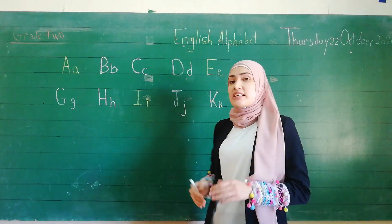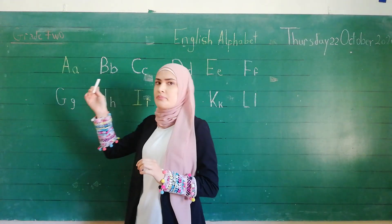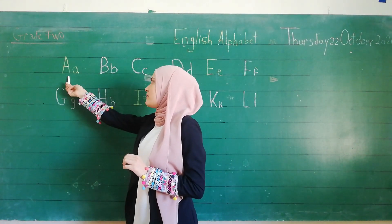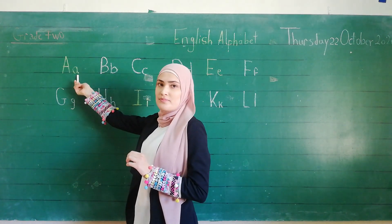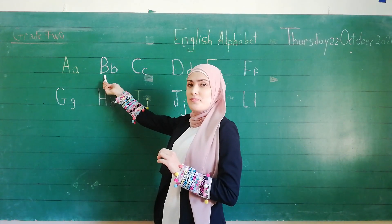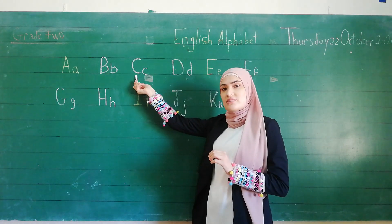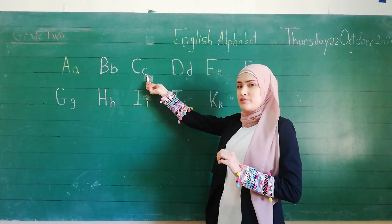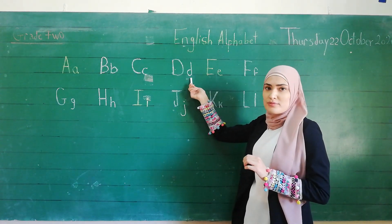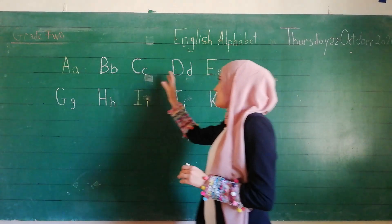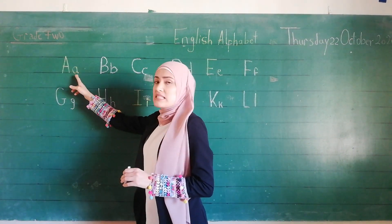We will start by the capital letter and the small letter. Like for example, A — capital letter and small letter. B — capital letter, small letter. C — capital, small. D — capital and small. Every letter has a capital letter and a small letter.